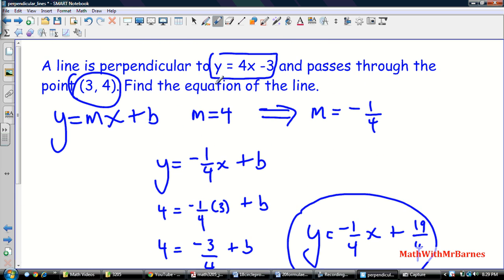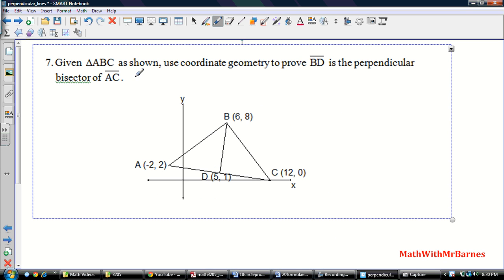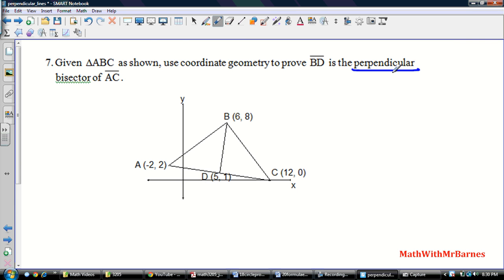That's a typical multiple choice example. As soon as you read the word perpendicular in a problem, you should be thinking negative reciprocal slopes—that's the key word with perpendicular lines. Let's try this one, a coordinate geometry test. Given triangle ABC as shown, use coordinate geometry to prove BD is a perpendicular bisector.